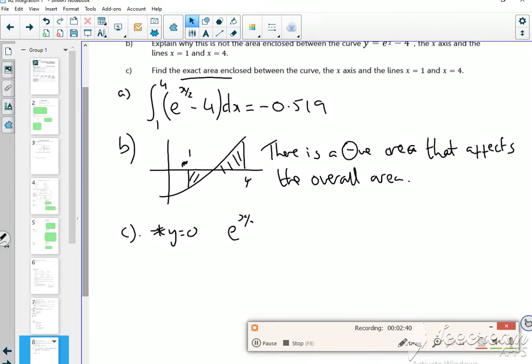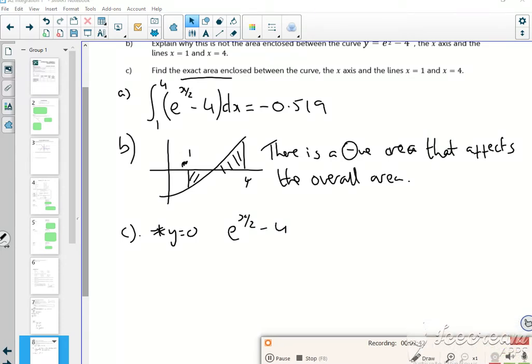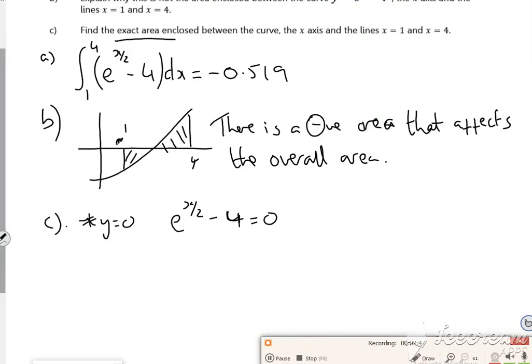So I need to find out where y is 0. So my e to the x over 2 minus 4 is equal to 0. So if I do a little bit of rearranging, e to the x over 2 is 4. Take logs. x over 2 is log 4. And x is 2 log 4.